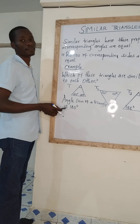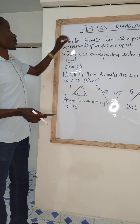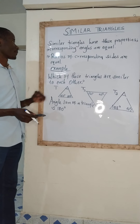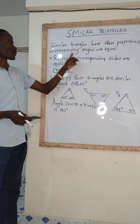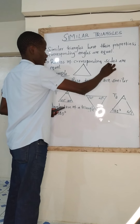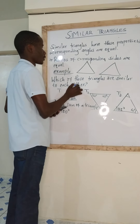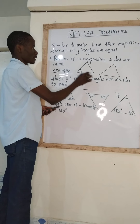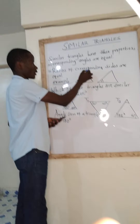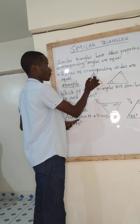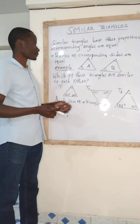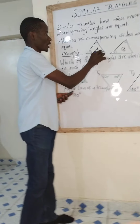Similar triangles — we want to look at similarity in triangles, what makes two triangles to be said to be similar. Now similar triangles have this particular property. Property one: corresponding angles are equal. If I sketch two triangles, corresponding angles are supposed to be equal. This angle here corresponds to this angle, so this one and this one are supposed to be equal. This angle here corresponds to this one, and so on, for triangle A and triangle B to be similar.